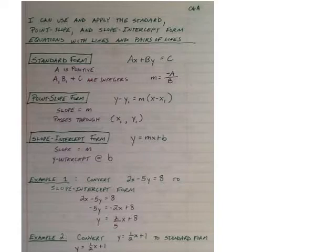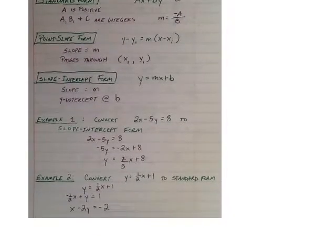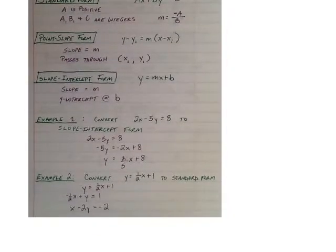So for this skill we should be able to do some conversions. I have shown in example 1 and 2 conversions. Example 1 we are given a standard form and we are told to convert it to slope-intercept form. What we want to do is first subtract 2x from both sides and then second divide both sides by negative 5. Let's change that to negative 8 over 5. So we would have y equals 2 fifths x minus 8 fifths.